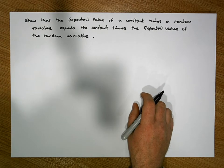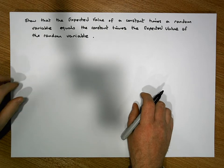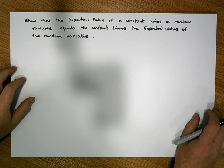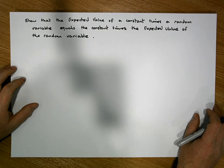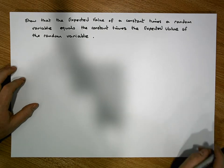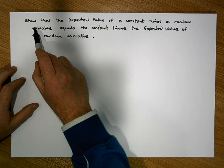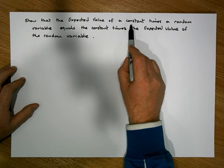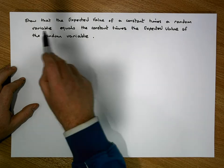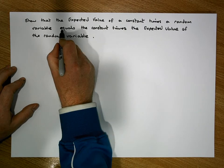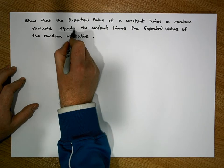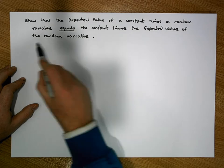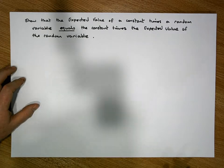Hi guys, this is Jonathan Lambert with the Mathematics Development and Support Service at the National College of Ireland. In this short video we're going to attempt to show that the expected value of a constant times a random variable equals the constant times the expected value of the random variable.